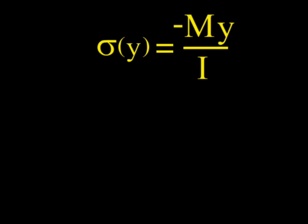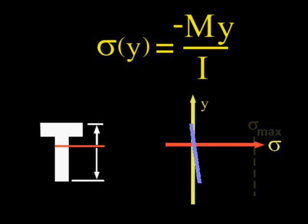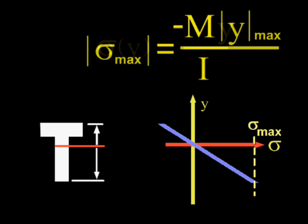Recall that the stress at y equals minus M times y over I. The maximum stress occurs at the fiber furthest from the neutral axis, ymax.